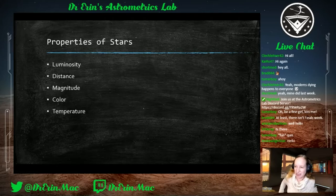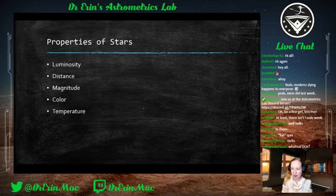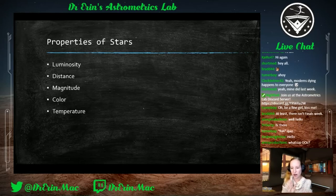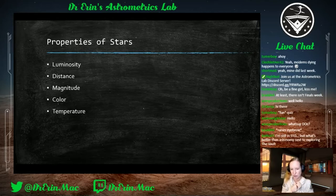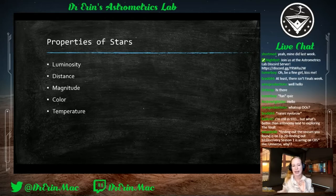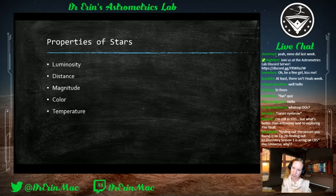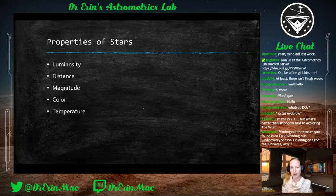This week we're going to be talking about properties of stars. The main properties we look at are luminosity, distance, magnitude, color, and temperature. They all relate to one another — sometimes these terms are interchangeable, sometimes we favor some more than others. These are the main properties we're going to look at today.